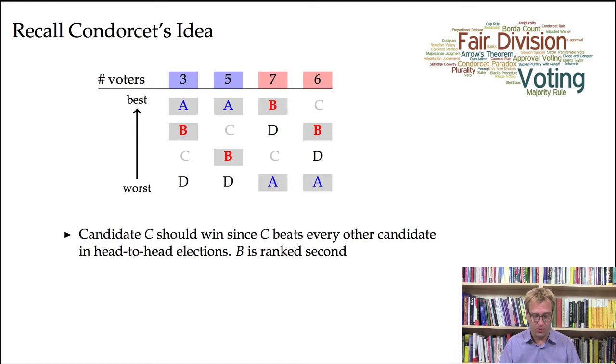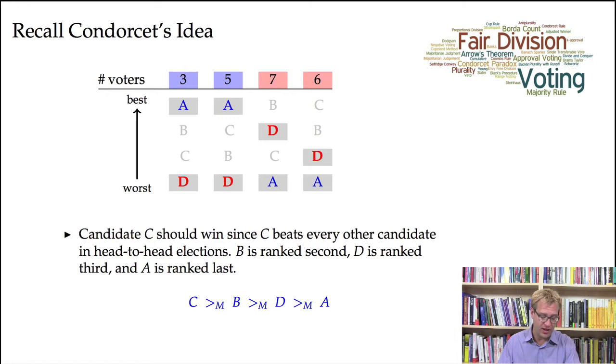So we see that B will be ranked second. Why is that? Well, B, 13 people rank B over A, but only 8 people rank A over B. Against D, everybody ranks B above D. So it's unanimous that everybody prefers, strictly prefers B over D. So B is ranked second, because B beats both A and D in a head-to-head election.